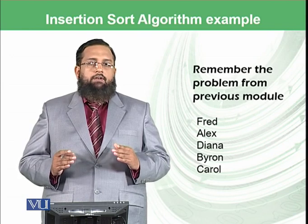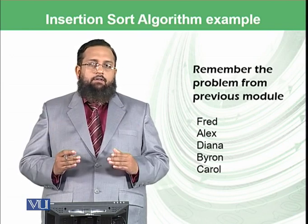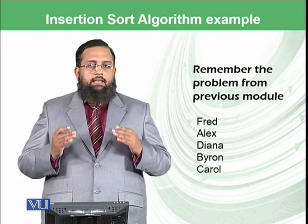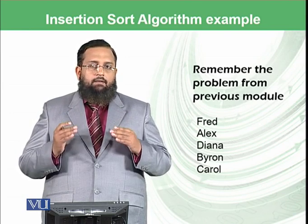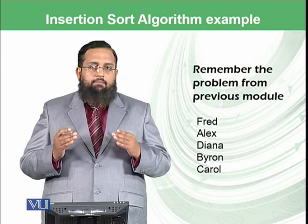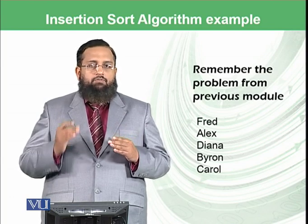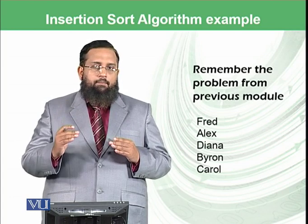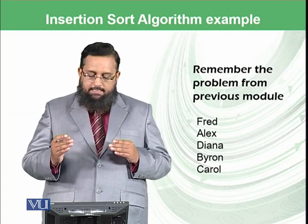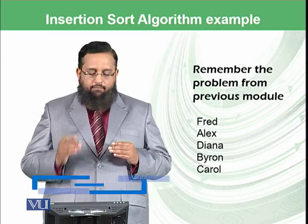We want to sort it in ascending order, which means the name Alex, which starts with letter A, will be placed on top, followed by B (Byron), C (Carol), D (Diana), and F (Fred).